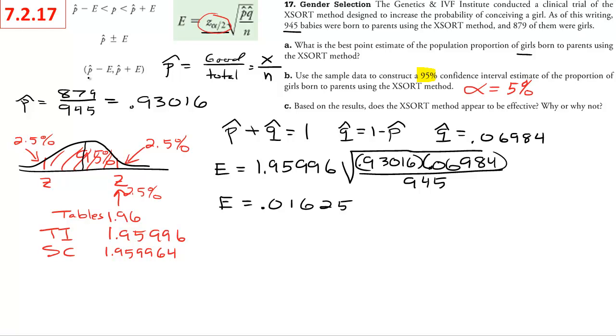So now to compute the actual 95% confidence interval, all we have to do is this simple math of p hat minus E and p hat plus E. So we're just doing the 0.93 plus or minus this. So again, you can do it in your calculator if you want or do it by hand.